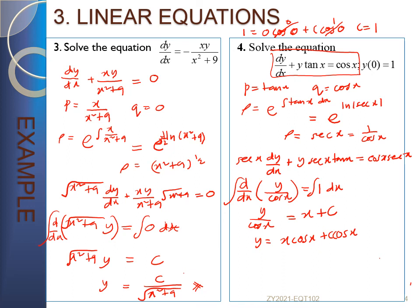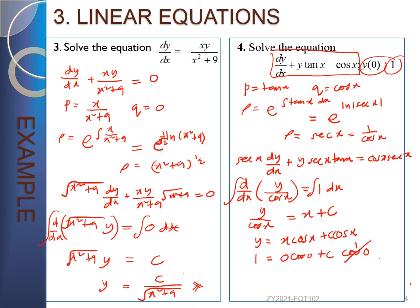Now we apply the initial condition y(0) equals 1. Substituting x equals 0 into y equals x·cos x plus c·cos x: 1 equals 0·cos(0) plus c·cos(0), so 1 equals c. Therefore the particular solution is y equals x·cos x plus cos x.